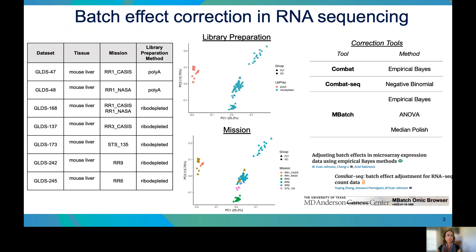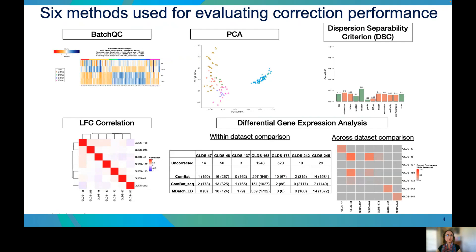We evaluate the performance of these correction methods using six different criteria: Batch QC, PCA, Dispersion Separability Criterion — which describes the clustering within versus between batches — correlation of log-fold change between flight and ground control samples across all datasets, and the comparison of differentially expressed genes between flight and ground control within each dataset before and after correction, or across all datasets.